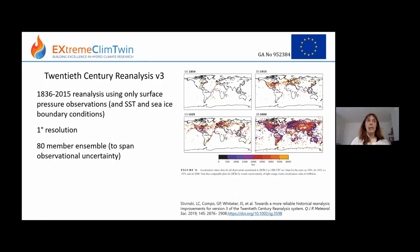The 20th Century Reanalysis is a bit special because it tries to go back as far in time as possible — it starts in 1836. Because we want the type of observations assimilated to be consistent through time, it only uses surface pressure, because that's a variable which is more available throughout this period than, say, temperature.